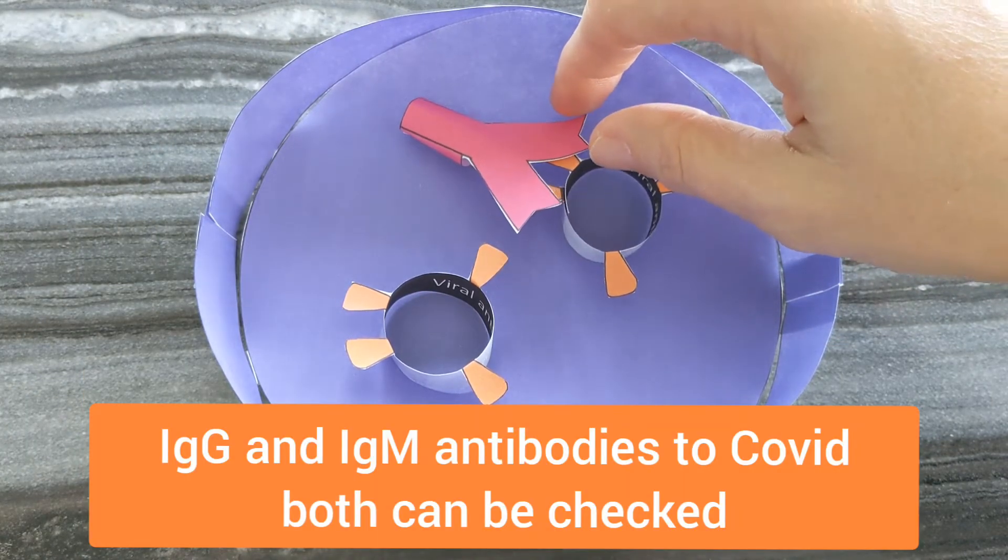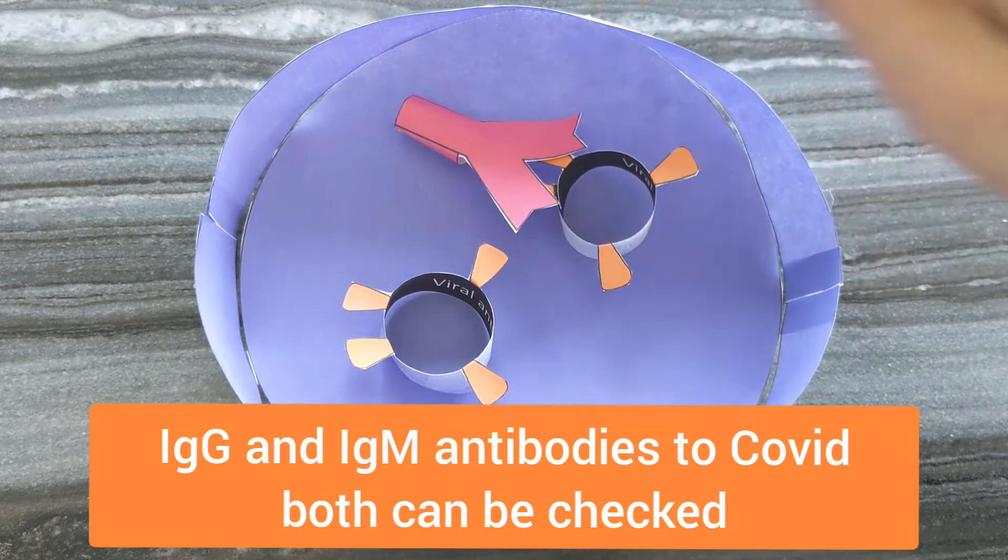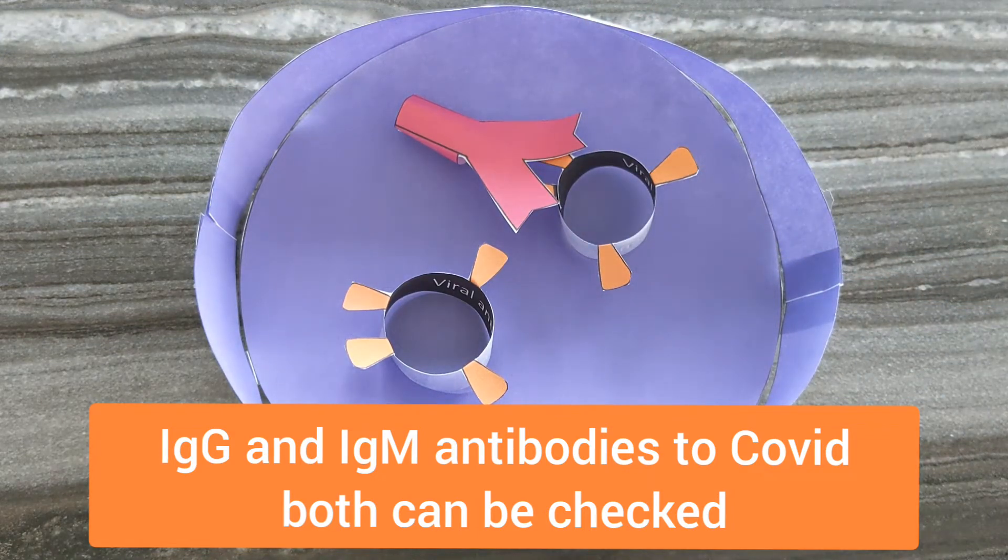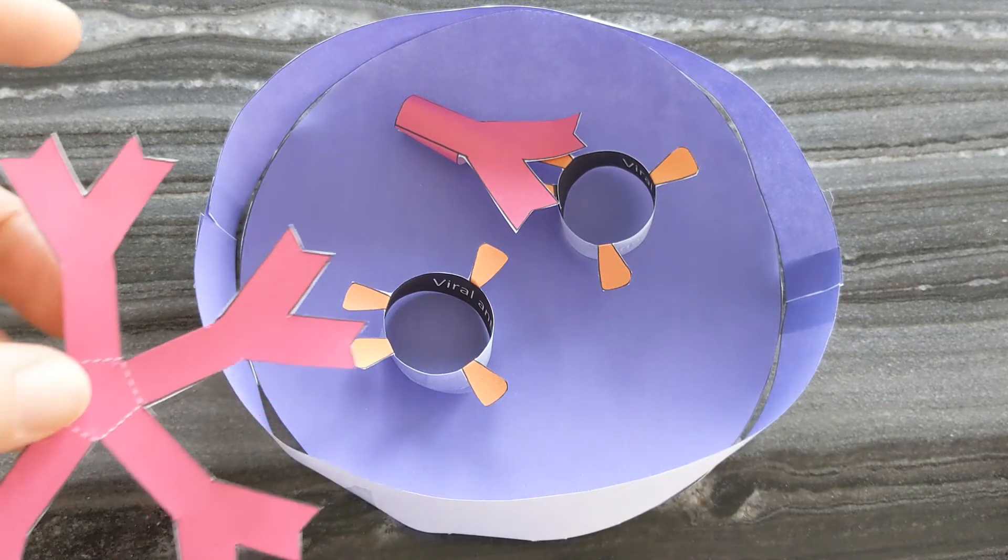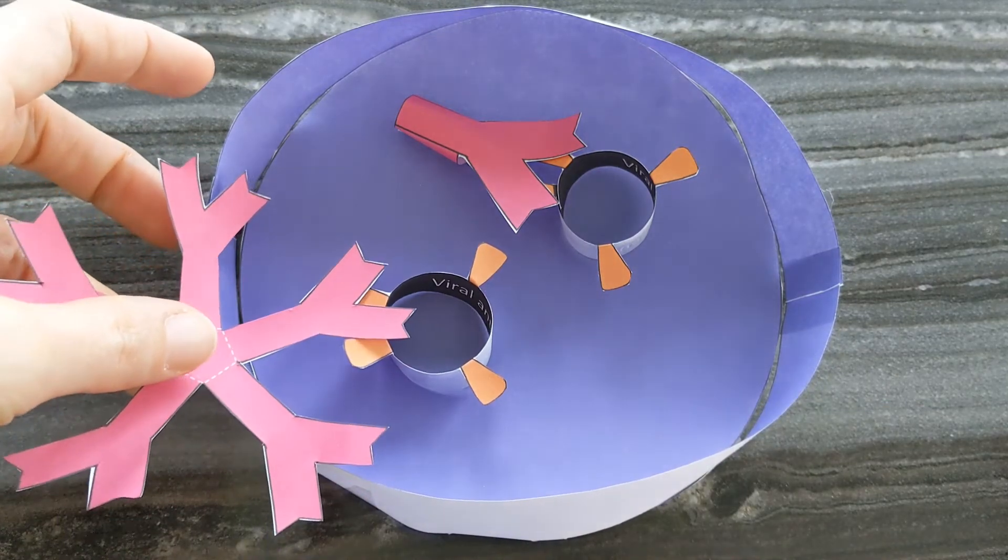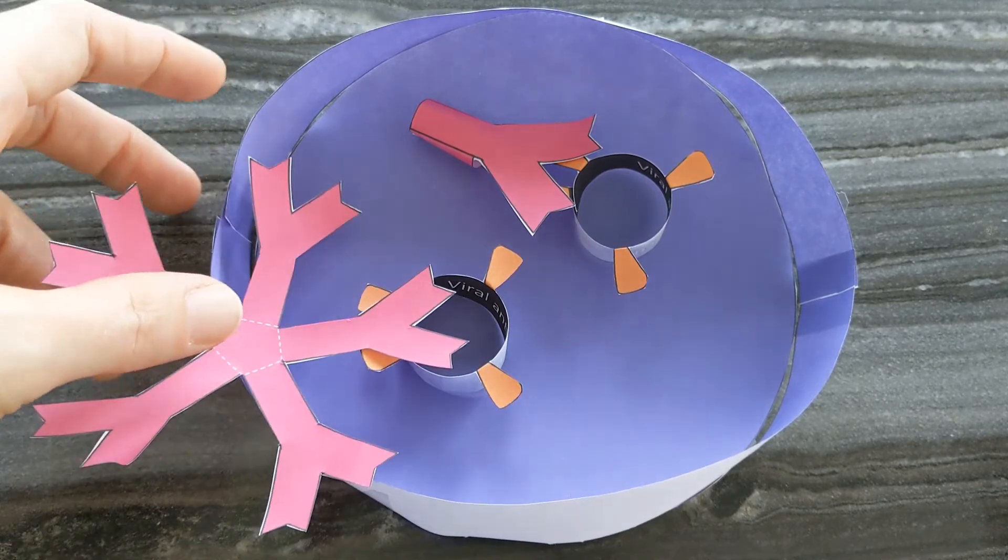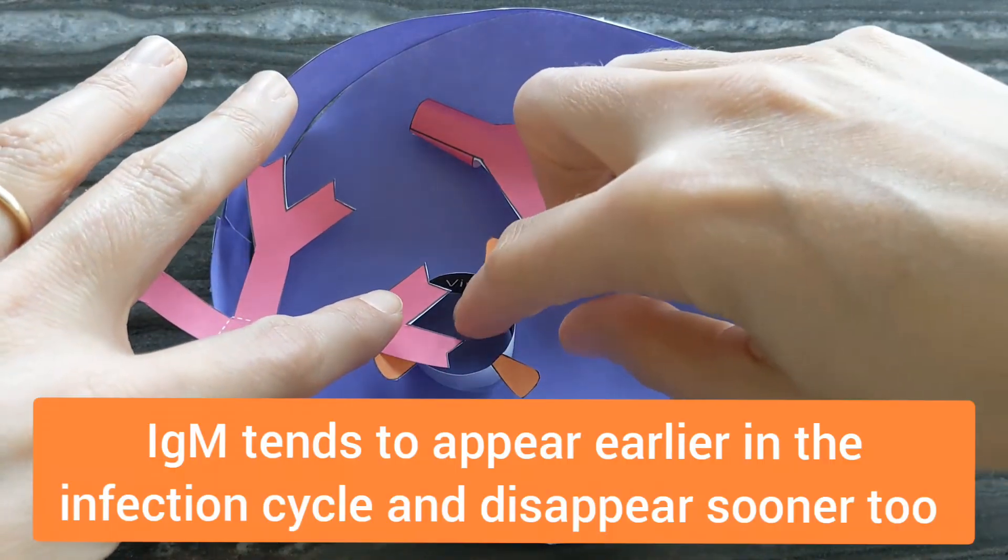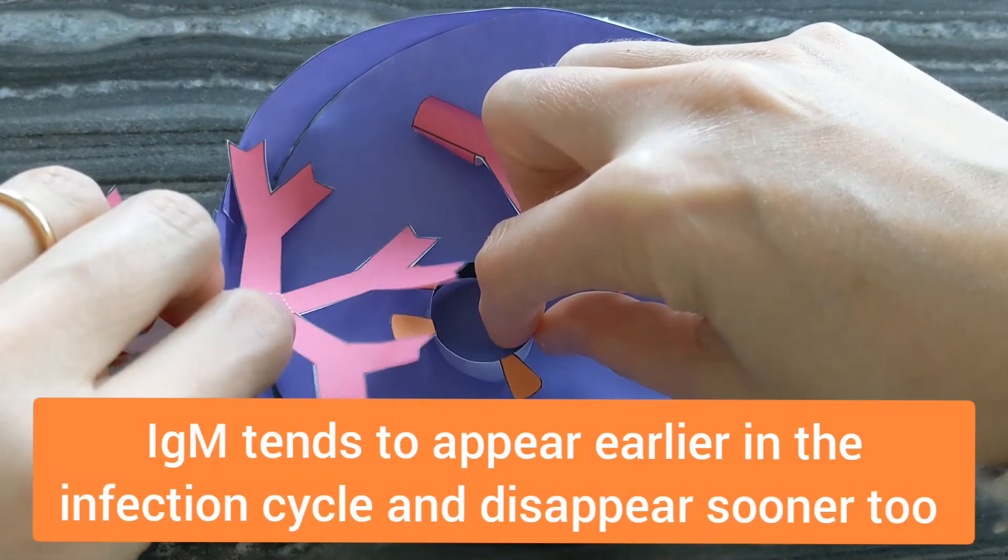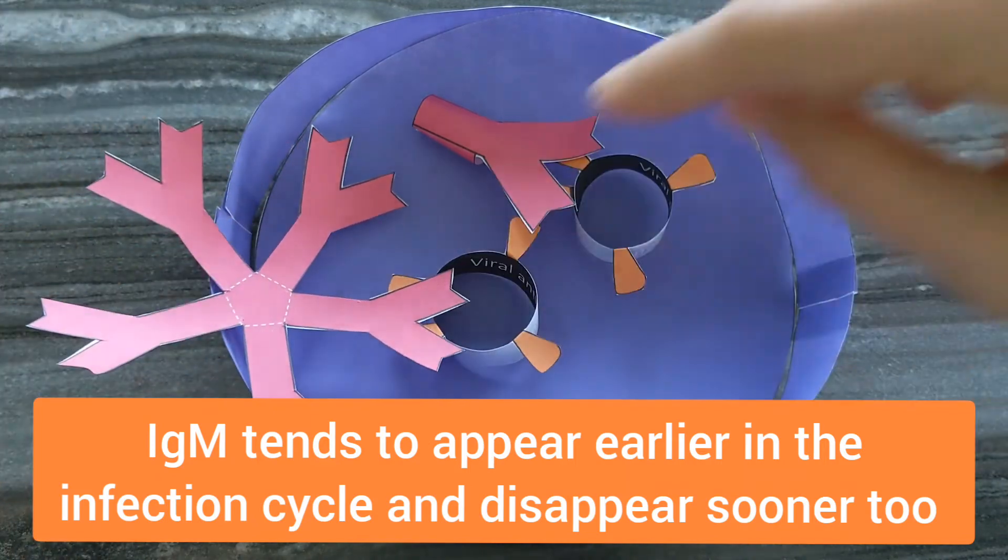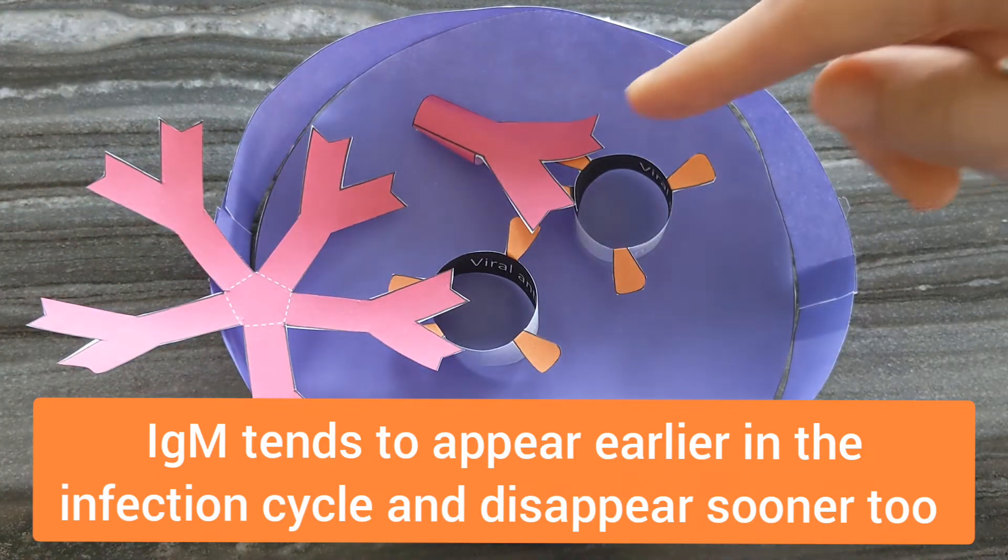This represents the IgG antibody, which is one of the antibodies that is a fighter against COVID-19. And this is the IgM antibody. You can see the antibodies look a little different. Some tests test for just IgM, some tests for just IgG, and some can test for both.